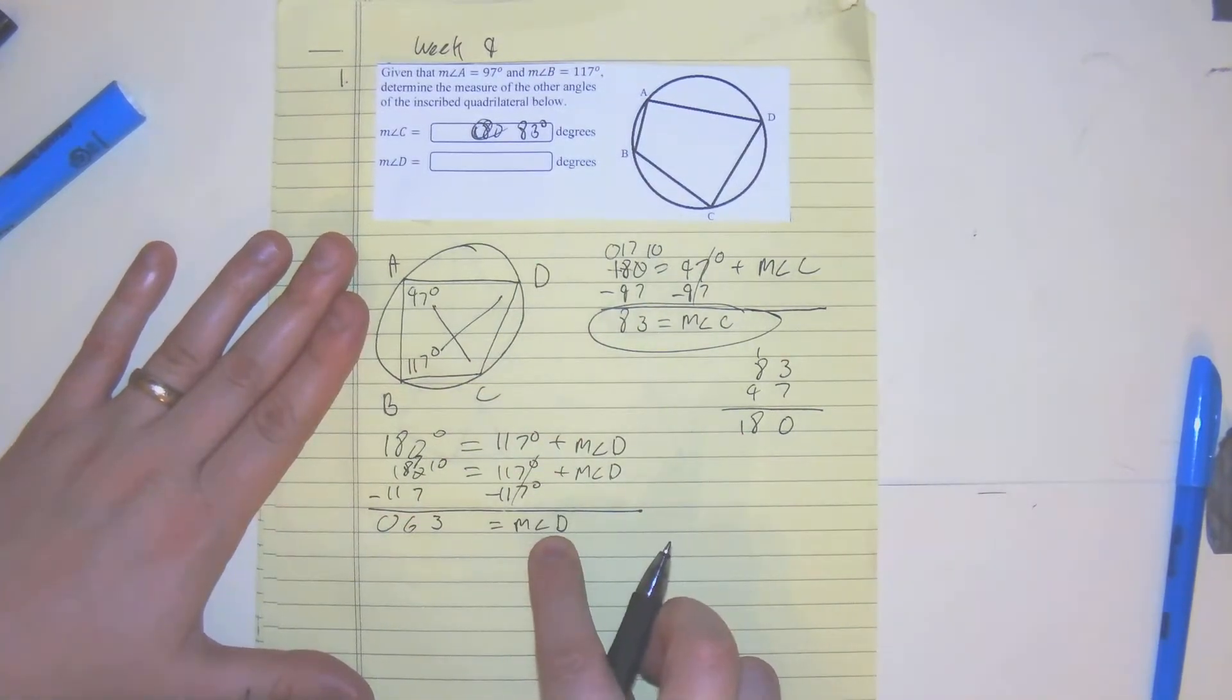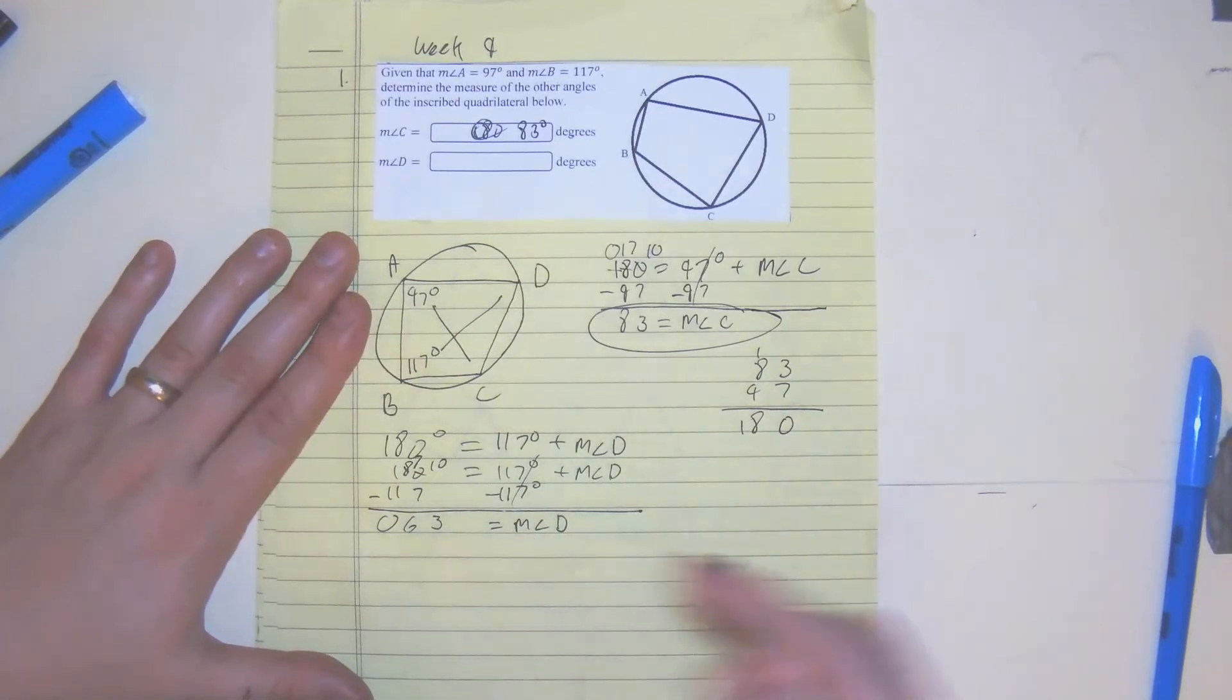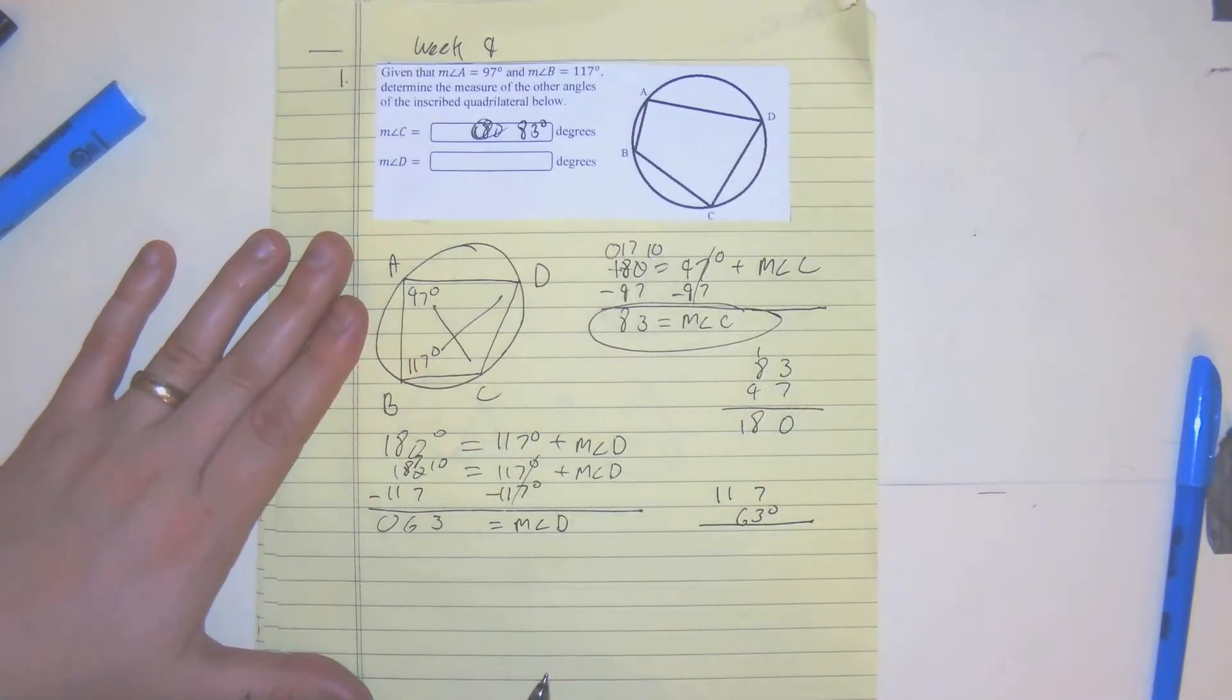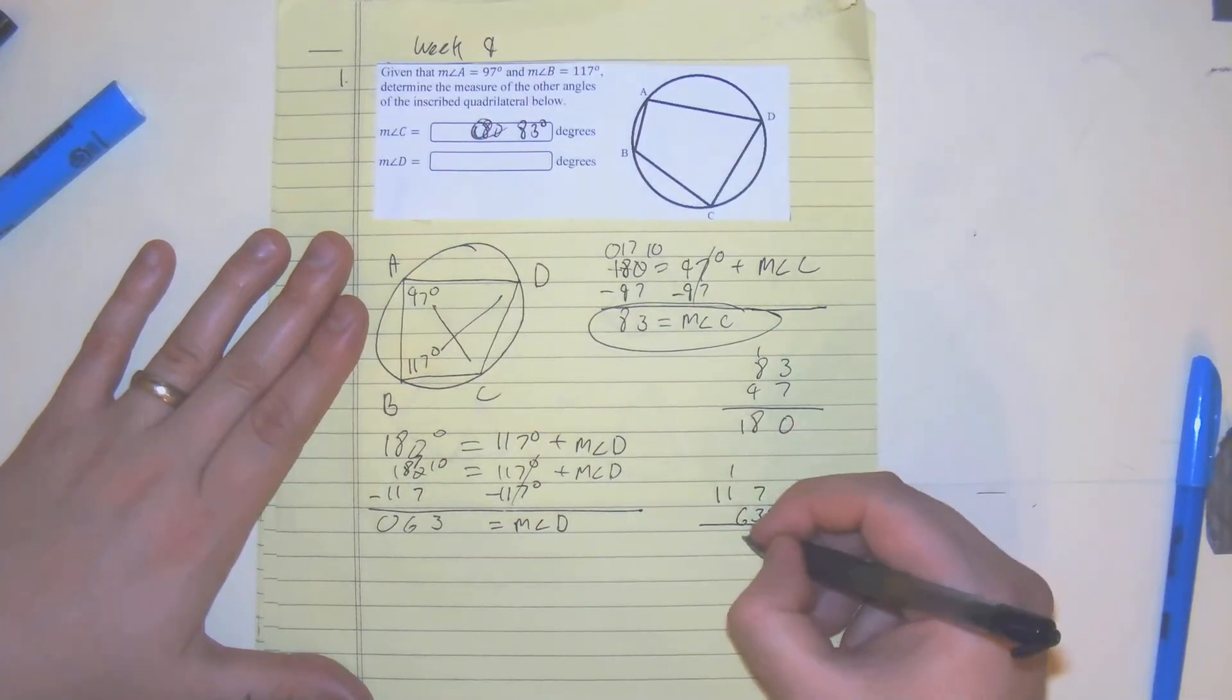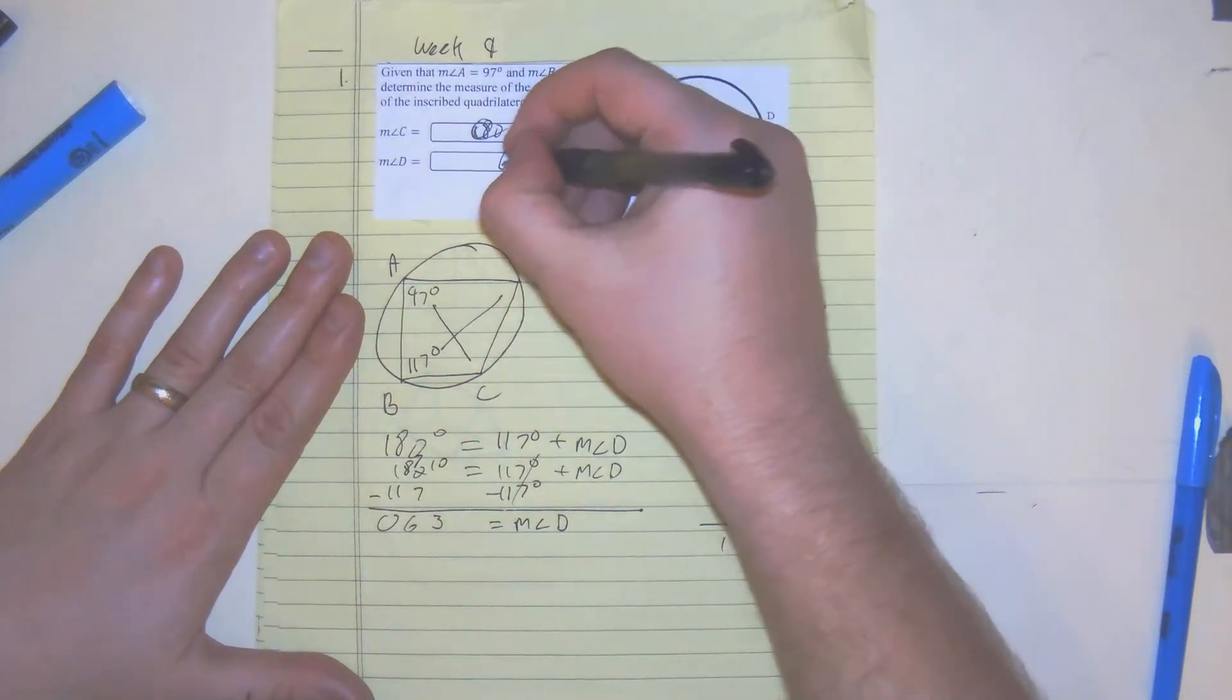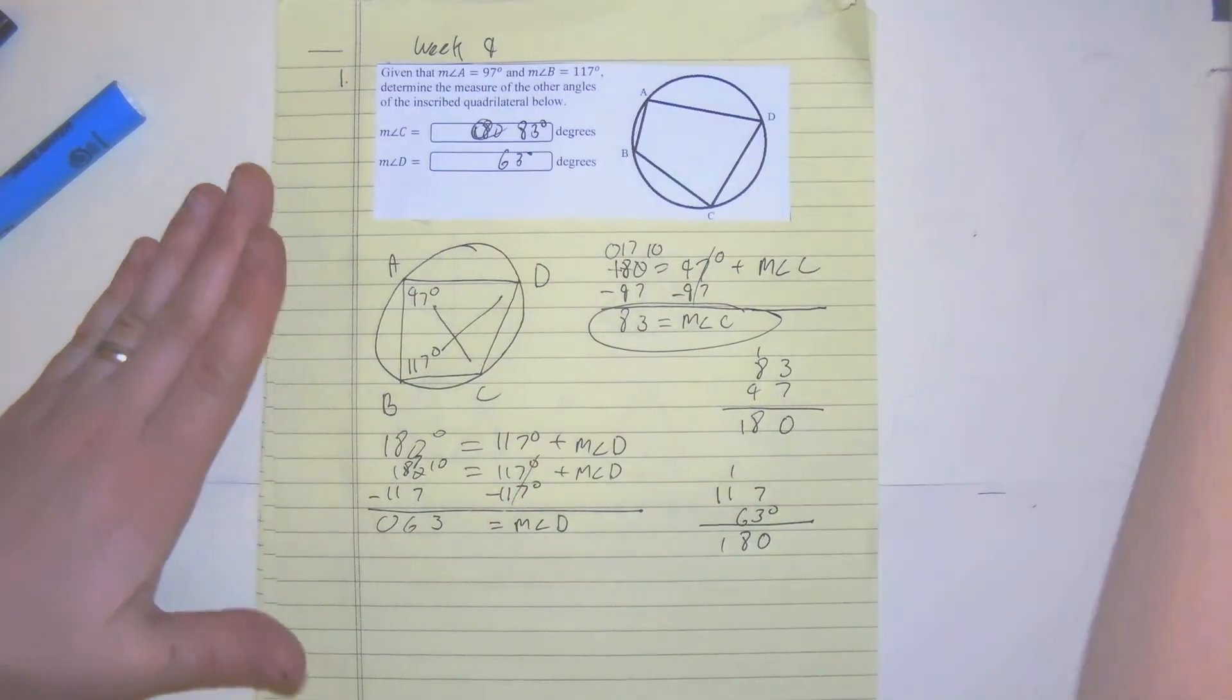You could always check your work by adding this to 63 degrees for the measure of D plus B, 117. You could always check your work this way. 0, 1, 7, 8, 180. So we did it right. The measure of angle D is 63 degrees. So the hint for this one is just knowing that opposite angles are supplementary.